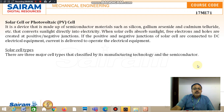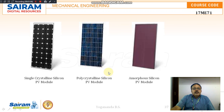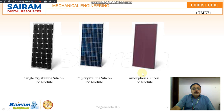We have three major solar cell types classified by manufacturing technology in the semiconductor: single crystalline silicon PV module, polycrystalline silicon PV module, and amorphous silicon PV module.